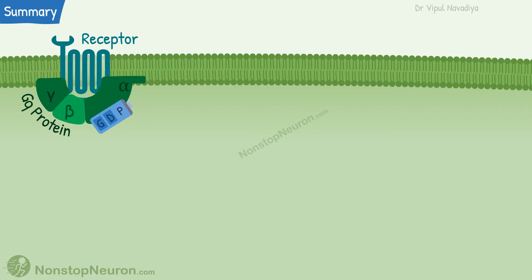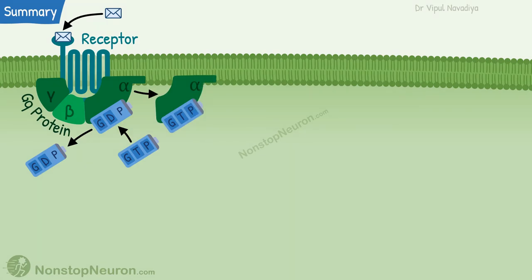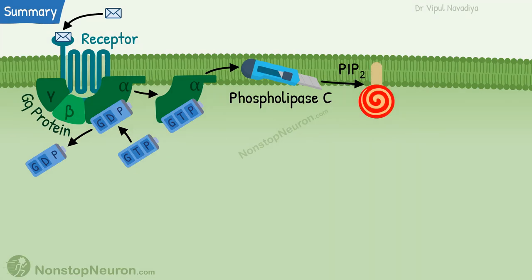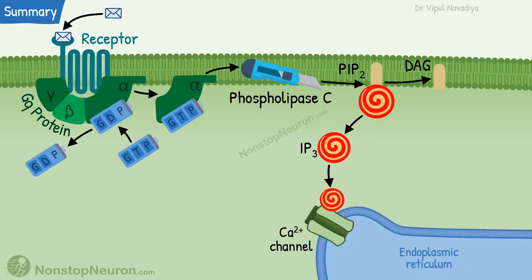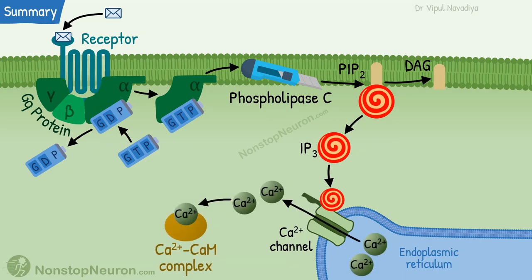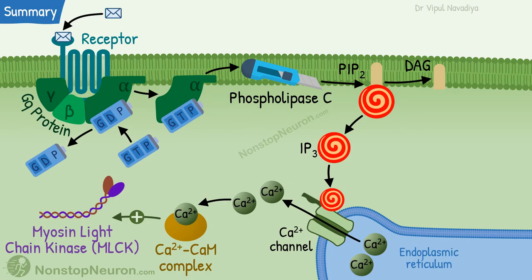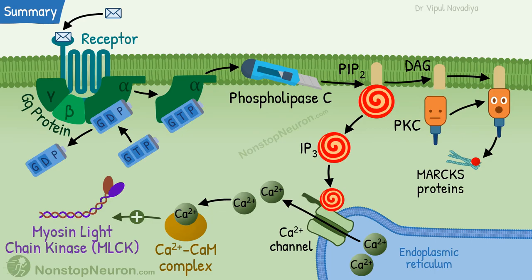Quick summary: Binding of a ligand with a GQ protein coupled receptor causes release of GDP and binding of GTP. The alpha subunit dissociates and activates Phospholipase C. Phospholipase C degrades PIP2 into IP3 and DAG. IP3 goes to the endoplasmic reticulum and opens the calcium channel. Released calcium binds with calmodulin, and the calcium-calmodulin complex alters the activity of downstream enzymes such as myosin light chain kinase. DAG activates PKC, which modulates the activity of other proteins like MARKS proteins and transcription factors.